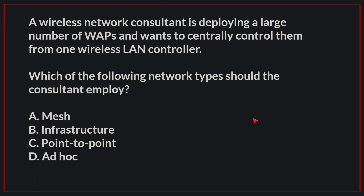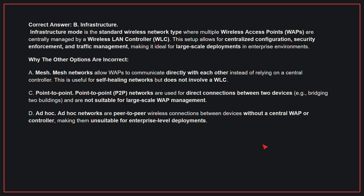A wireless network consultant is deploying a large number of WAPs and wants to centrally control them from one wireless LAN controller. Which of the following network types should the consultant employ? The correct answer is B, Infrastructure. Infrastructure mode is the standard wireless network type where multiple wireless access points are centrally managed by a wireless LAN controller. This setup allows for centralized configuration, security enforcement, and traffic management, making it ideal for large-scale deployments in enterprise environments.